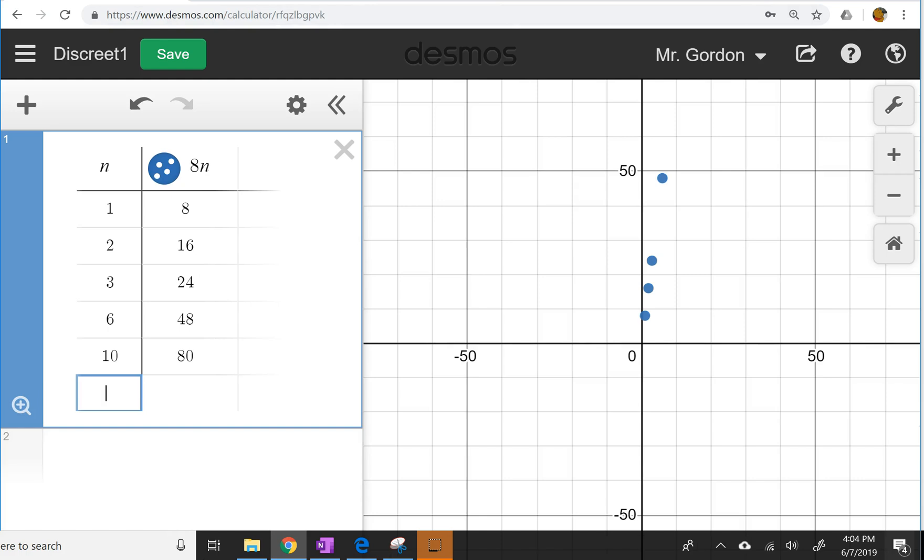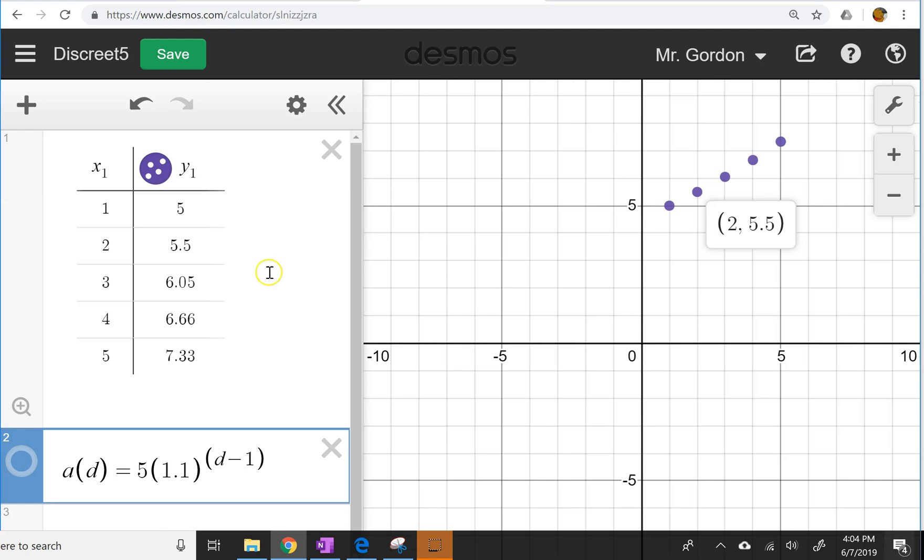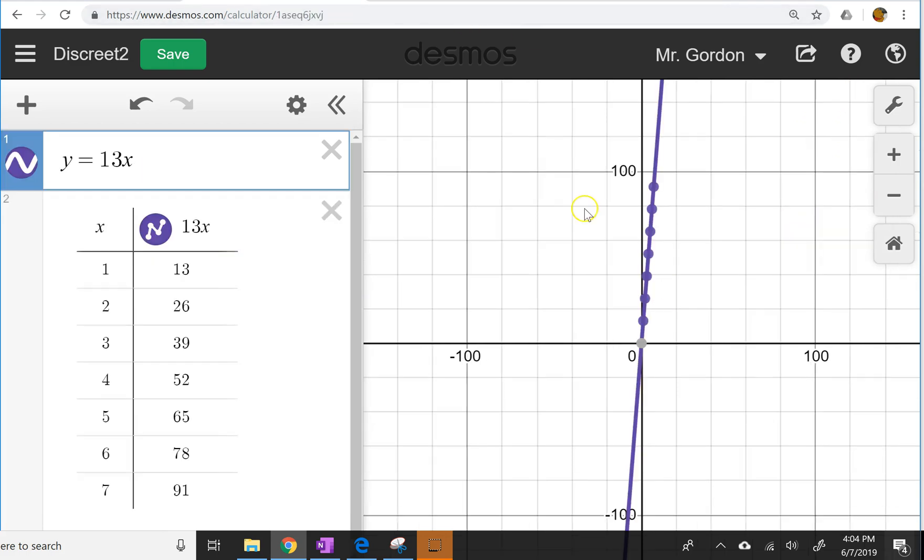Case one, problem one was a linear function that was discrete, and case two was a linear function that was continuous. So we're comparing linear and exponential functions. We're also comparing discrete and continuous. And so notice that the key giveaway that this is an exponential function is the curvature of the graph compared to the straight linear functions.